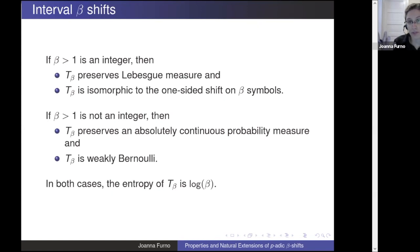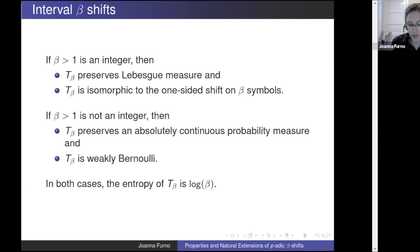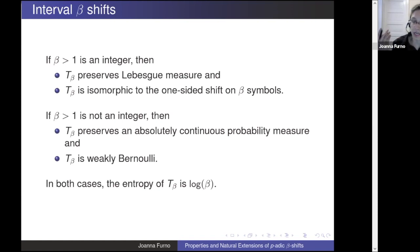When beta is an integer, the transformation preserves Lebesgue measure, and the transformation is isomorphic to the one-sided shift on the same number of symbols as the integer. The isomorphism comes from our expansions: take your list of digits and that gives you a one-sided product space where each coordinate's options are your digits, and the transformation shifts over. This is a measure-theoretic isomorphism where we're allowed to throw away sets of measure zero.